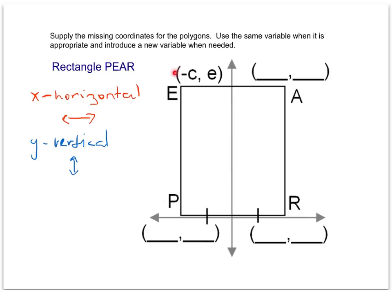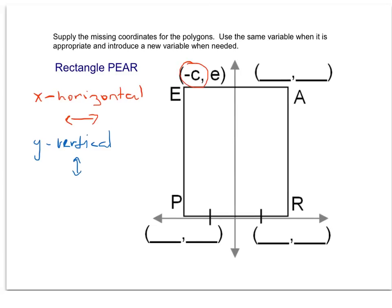In this rectangle, we're only given information about one of the vertices, and that's going to be enough to fill in the three missing pieces. I'll start with the x value, which says negative c — that represents the horizontal distance. The negative just means that point is in the second or third quadrant, going left from the origin. The distance itself is c, since distance is always positive. That means the corresponding distance below is also c, and because of the congruency marks, the top measure is also c.